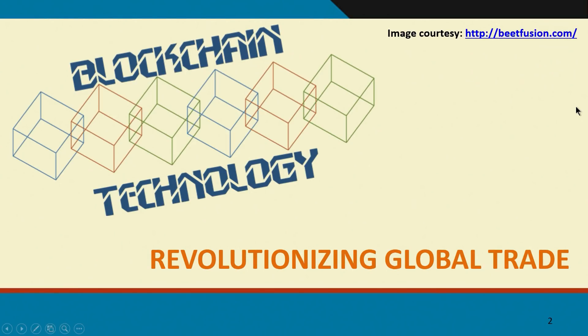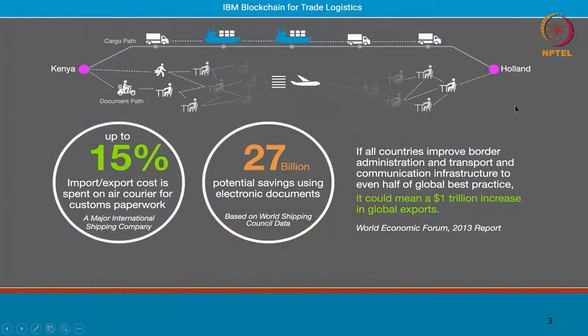This is about revolutionizing global trade. Global trade is about shipping goods from one country to another, and this is an industry that has seen very little technological penetration, even through the internet age. There is very little technological penetration — there is a lot of paper documents and manual effort that is needed. We talked about the financing side of trade, how the money would reach from the importer to the exporter.